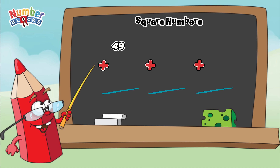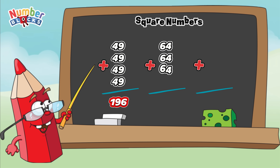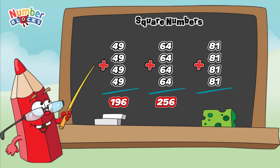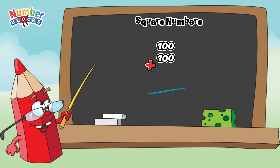49 plus 49 plus 49 plus 49 is equals to 196. 64 plus 64 plus 64 plus 64 is equals to 256. 81 plus 81 plus 81 plus 81 is equals to 324. 100 plus 100 plus 100 plus 100 is equals to 400.